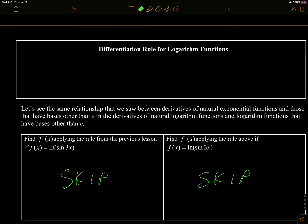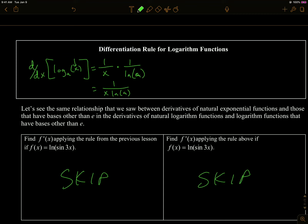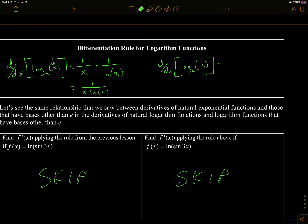Now, how do we handle logarithmic functions? The rule for log base a of x is 1 over x times 1 over the natural log of a, which we can write more succinctly as 1 over (x times the natural log of a). With chain rule, if I have log base a of some function u, it becomes u prime over u times the natural log of a — that u prime is the chain rule part.